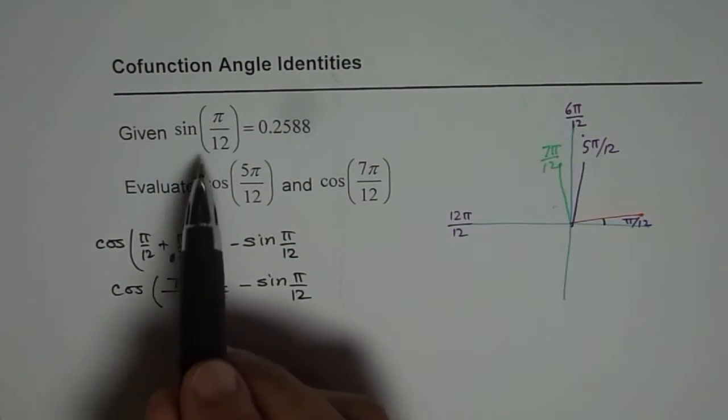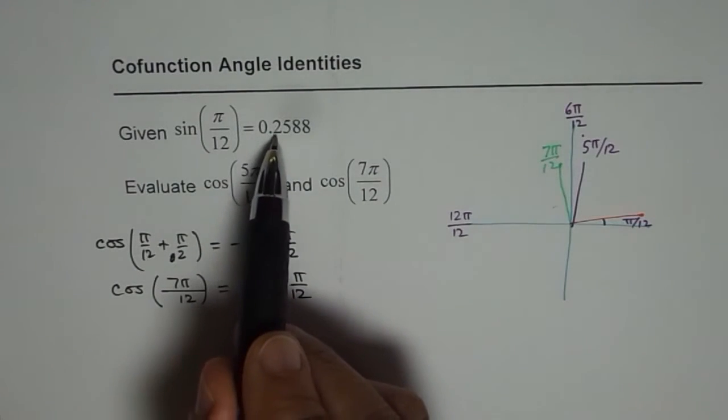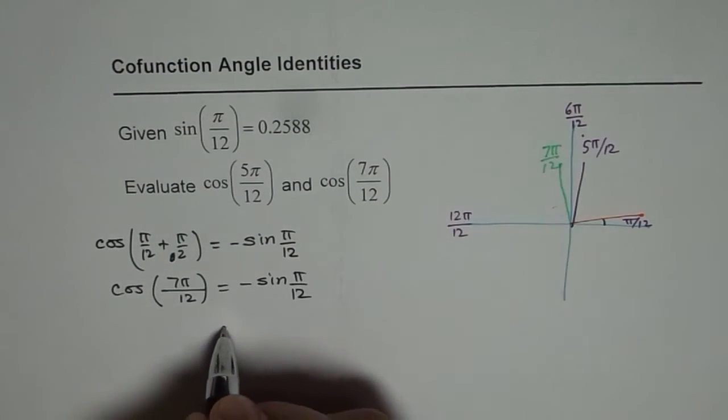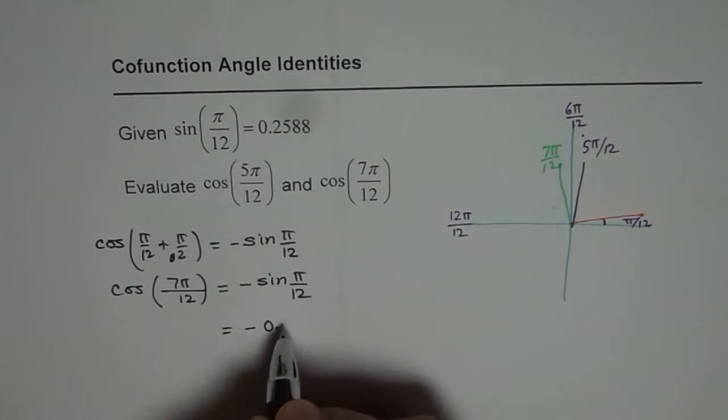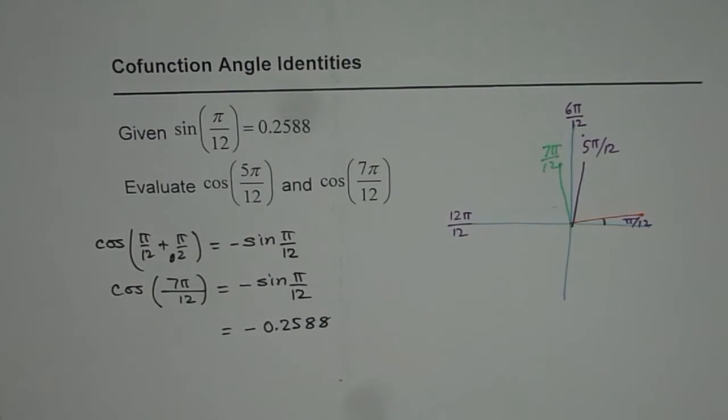Now since we are given sin of π/12 is 0.2588, we could write this as minus 0.2588. So that is cos of 7π/12.